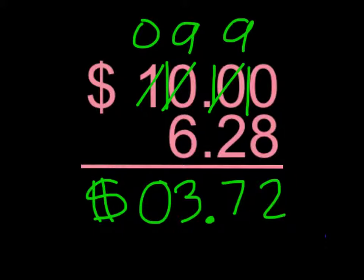Ten minus eight equals two. Nine minus two equals six. Nine minus six equals three. And then this is a zero, and I put the dollar sign.